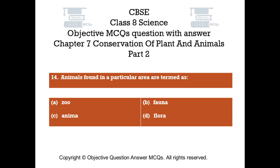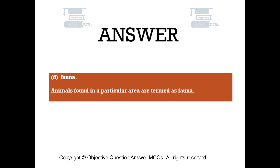Question number 14. Animals found in a particular area are termed as: Option A zoo, Option B fauna, Option C anima, Option D flora. The right answer is Option B — Fauna. Animals found in a particular area are termed as fauna.